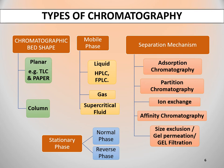On the basis of mobile phase, chromatography can be liquid chromatography, gas chromatography, or supercritical fluid chromatography. Liquid chromatography can be carried out either in a column or on a planar surface. In gas chromatography, separation is always carried out in a column which is typically packed or capillary. Supercritical fluid chromatography uses a supercritical fluid such as carbon dioxide as the mobile phase. It combines properties of gas and liquid phases, as it can behave both like a gas and a liquid in terms of different aspects.